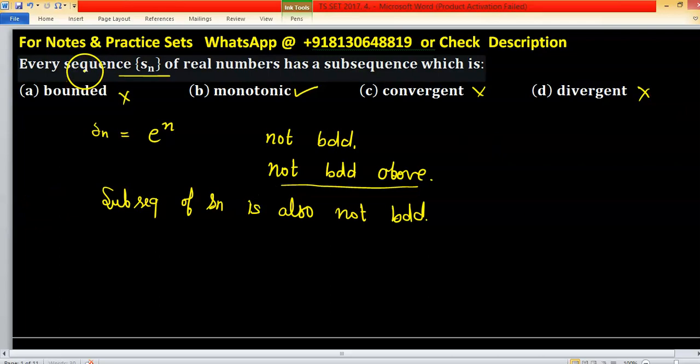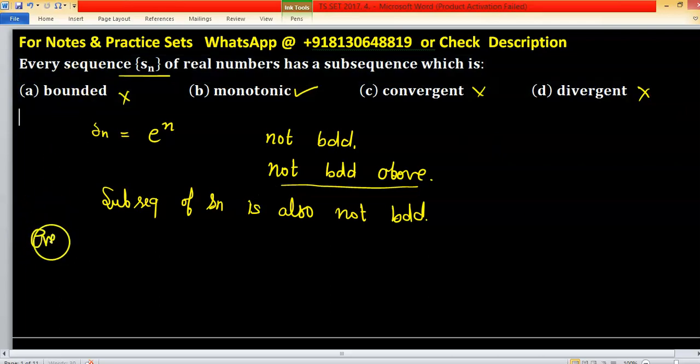But if this problem is asked in this manner: every bounded sequence of real numbers has a subsequence which is convergent, then option c will be correct. This comes from the Bolzano-Weierstrass theorem that says